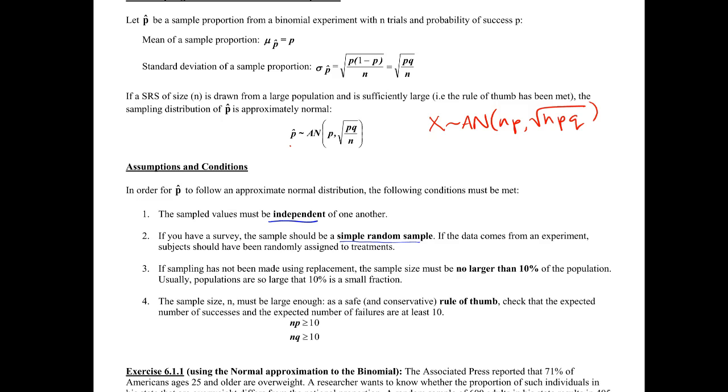Number three is probably the weirdest one here. Our sample size must be no larger than 10% of the population. This sort of is at odds with number four. Number four says our sample size must be large enough so that we have our rule of thumb met.